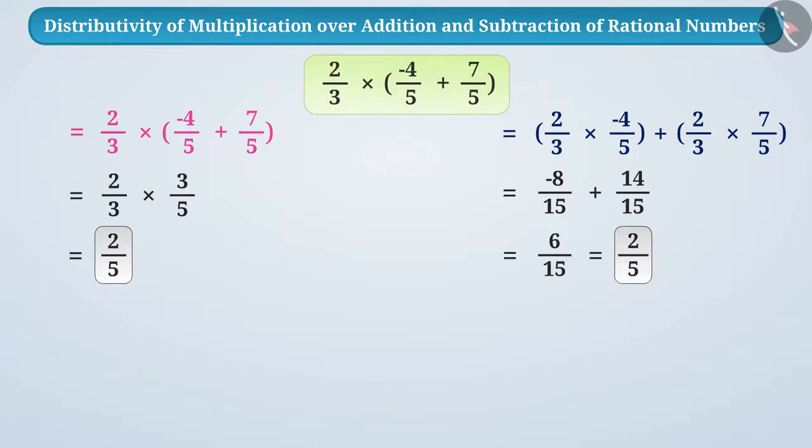So we can say that 2 by 3 multiplied by minus 4 by 5 plus 7 by 5 is equal to 2 by 3 multiplied by 7 by 5.